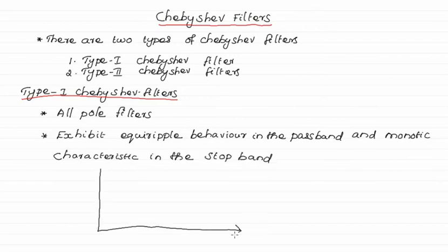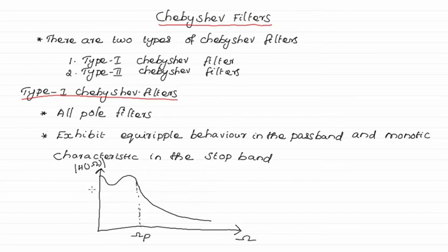Let us see the equiripple and monotonic characteristics in the graph. The passband shows equiripple behavior, while in the stopband it is monotonically reducing. The passband frequency is given by ωp and its magnitude is given by 1/√(1+ε²). The stopband magnitude is given by 1/√(1+ε²·Cn²) and its frequency is given by ωs.